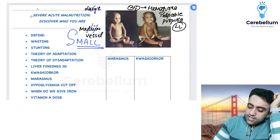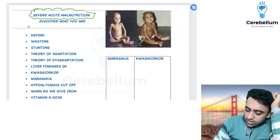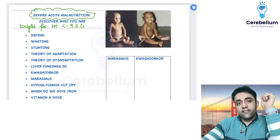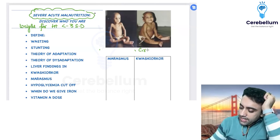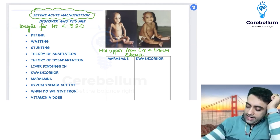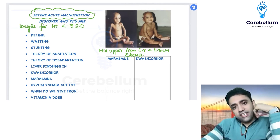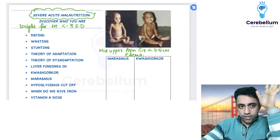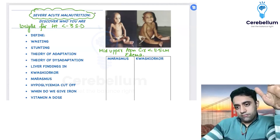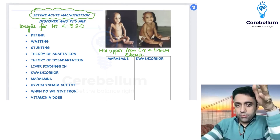SAM stands for Severe Acute Malnutrition. SAM is defined as: weight-for-height less than minus three standard deviations, mid upper arm circumference (MUAC) less than 11.5 centimeters, or edema. Any one of these three criteria is sufficient — it need not be all three together.